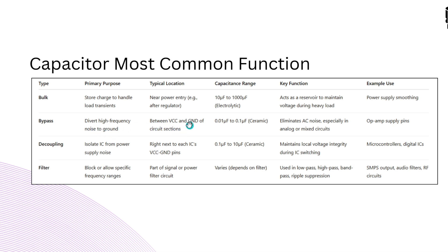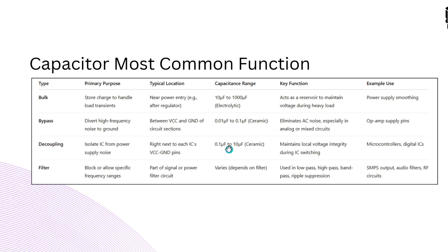Bypass capacitors divert high-frequency noise to ground. They are placed between VCC and ground near circuit sections, with typical capacitance from 0.01 µF to 0.1 µF using ceramic types. They eliminate AC noise especially in analog and op-amp supply pins. Decoupling capacitors isolate ICs from power supply noise and are placed right next to each IC's VCC and ground pins, typically ranging from 0.1 µF to 10 µF. Values like 22 µF and 47 µF are also used as decoupling capacitors.